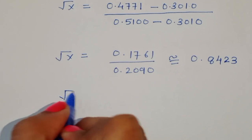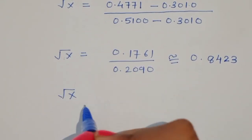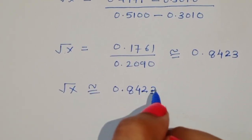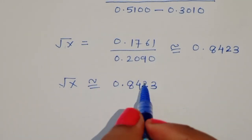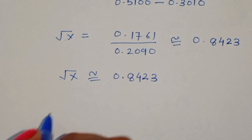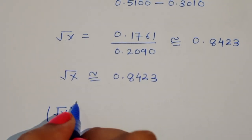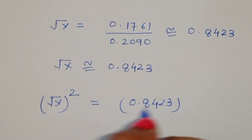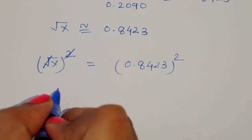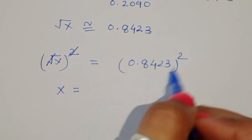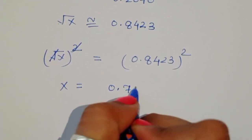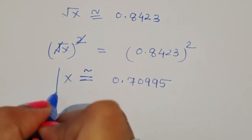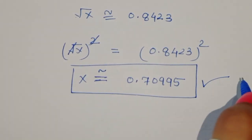So the approximate value of square root of x is 0.8423. To find x, we square both sides: x equals 0.8423 squared, which gives approximately 0.70995. This is the approximate value of x, and this is the solution for the equation. Thank you.